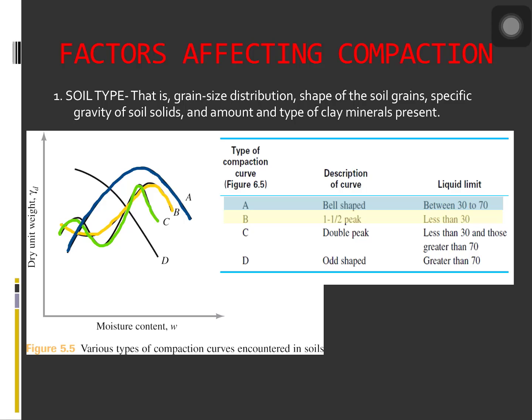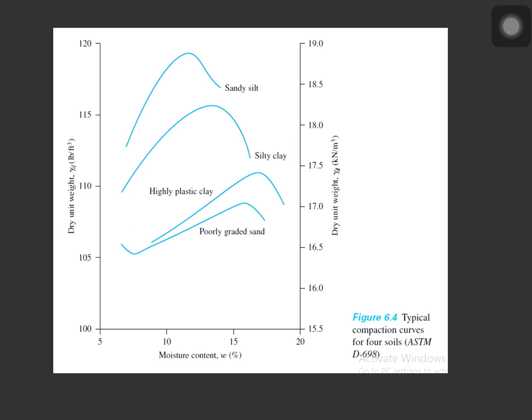Compaction curves of type D are the ones that do not have a definite peak. Soils with liquid limit greater than about 70 may exhibit compaction curves of type C or D. Soils that produce C and D type curves are not very common. Here are the typical compaction curves for four soils.